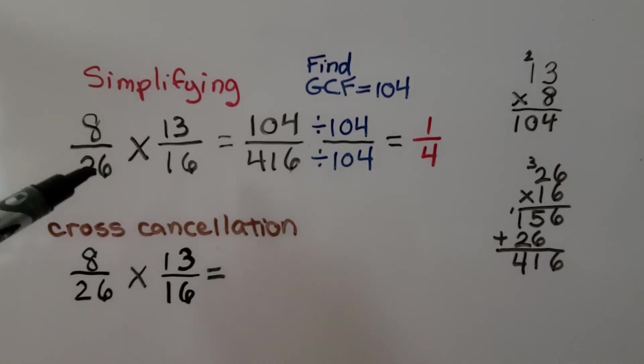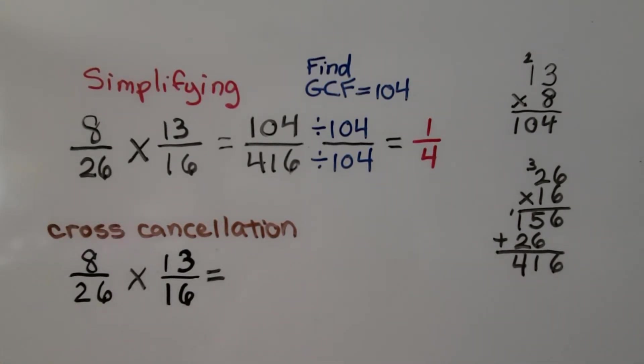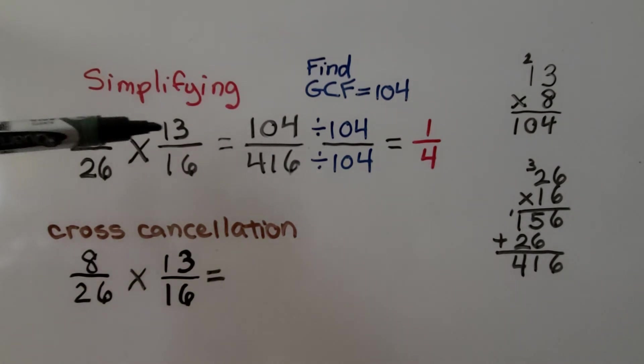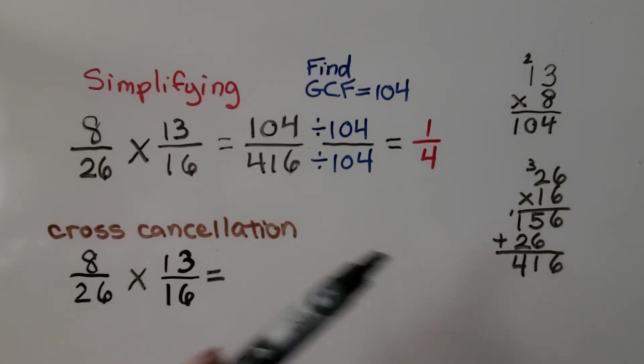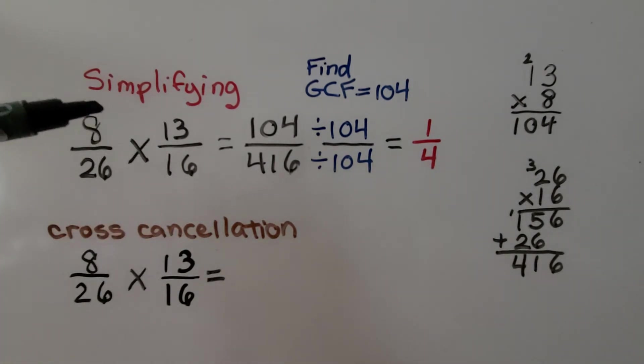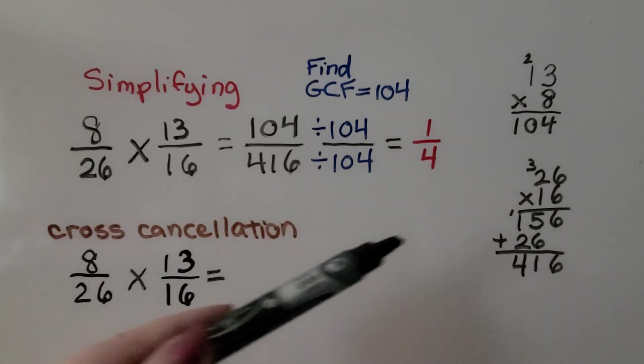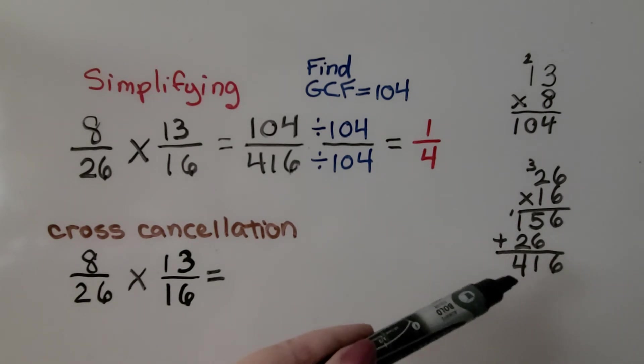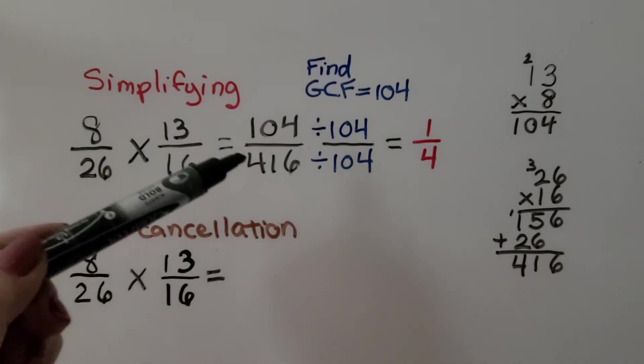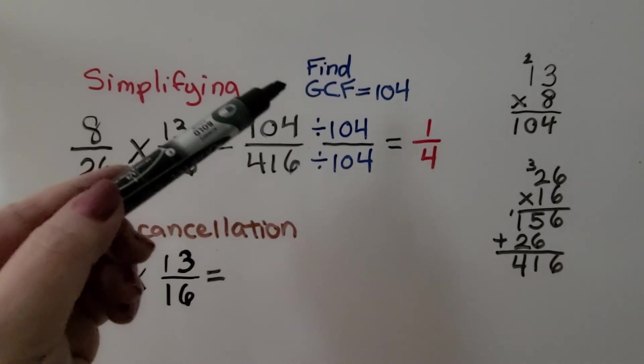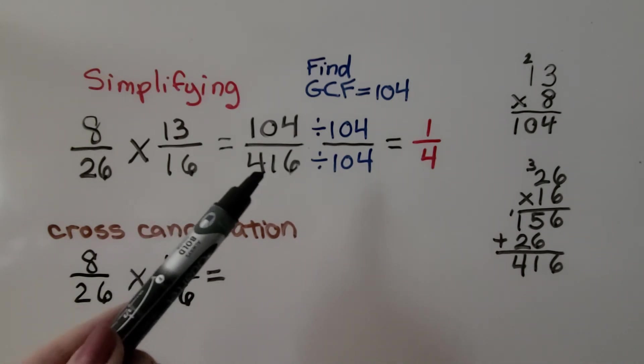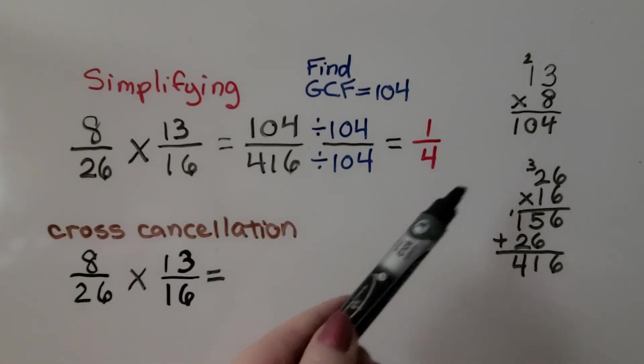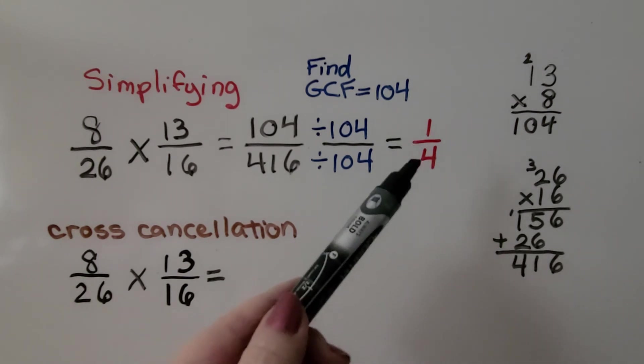Here we've got 8 26ths times 13 16ths. We multiply numerator to numerator, 8 times 13. That's 104. I had to do it on the side because I don't have that memorized, so we have 104 as our numerator. Now we have to do 26 times 16. I did that on the side and got 416, so now I have 104 416ths. And I needed to find that the GCF was 104. I may have made a mistake and tried using 2 and then simplifying over and over until I got to 1 4th.